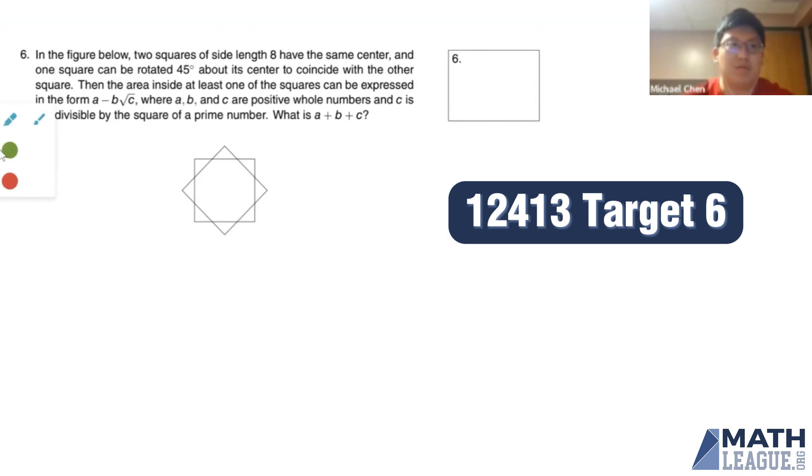In the figure below, two squares of side length 8 have the same center, and one square can be rotated 45 degrees about its center to coincide with the other square. Then the area inside at least one of the squares can be expressed in the form a minus b times the square root of c for positive whole numbers a, b, and c, such that c is not divisible by the square of any prime. What is a plus b plus c?